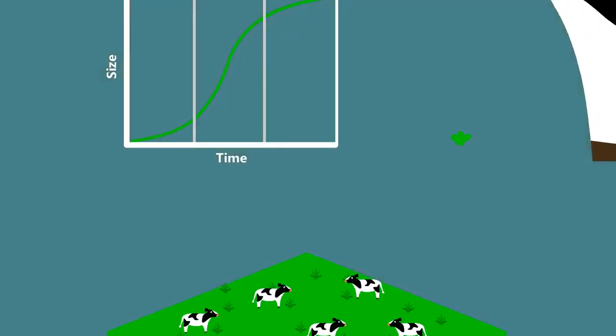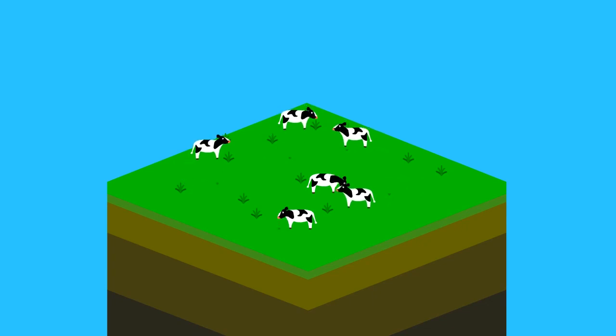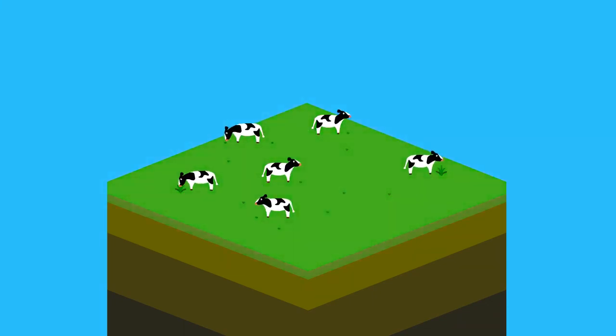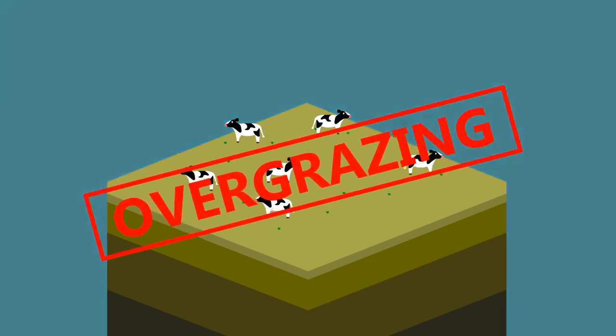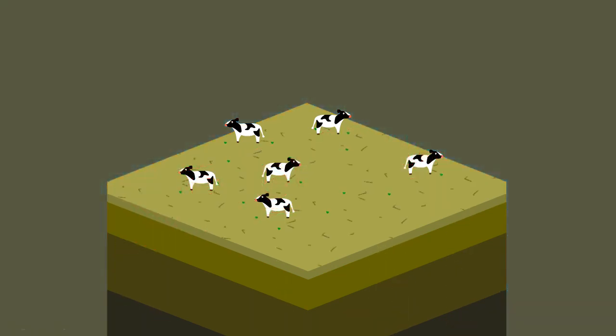This is what happens with traditional pastured animals. They eat all the grass, which doesn't have the chance to grow back fast enough before getting eaten again, and we have overgrazing. This leads to soil erosion, drought, and desertification.